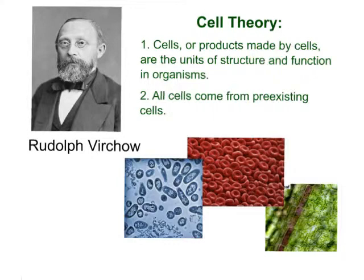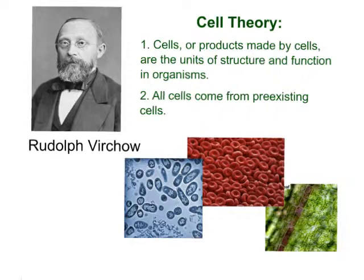This is the part of the cell theory that is so important: all cells come from pre-existing cells. Cells don't just randomly appear or come from air or spoiled food — cells come from cells. Cells, or products made by cells, are the units of structure and function in organisms; they are the basic unit of life. Rudolf Virchow was the scientist who stated these ideas simply as cell theory. So remember, cells are the basic structure of life, and all cells come from pre-existing cells.